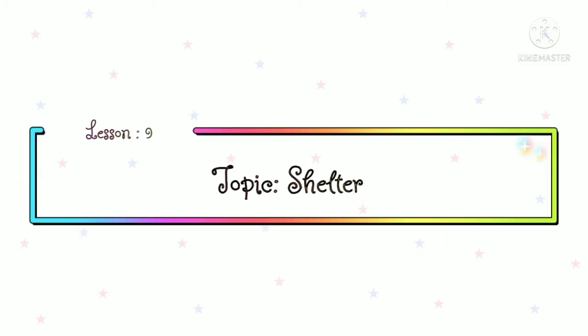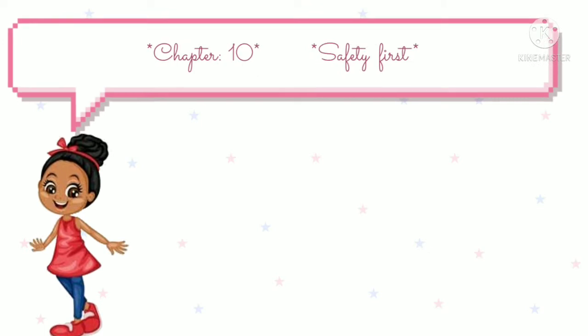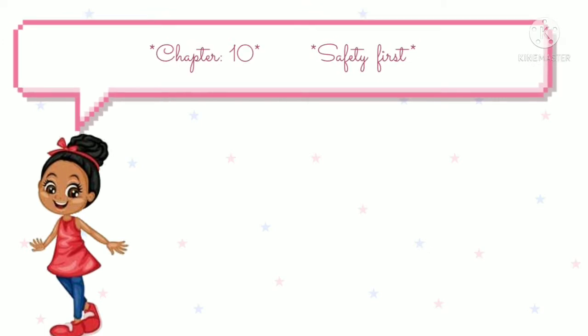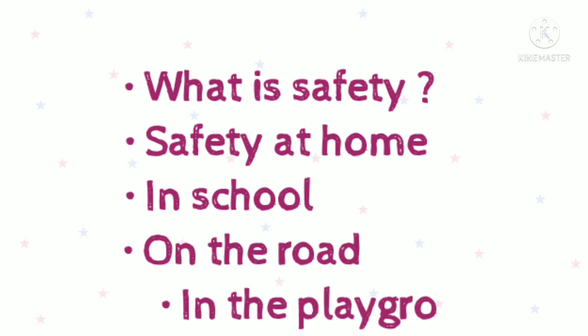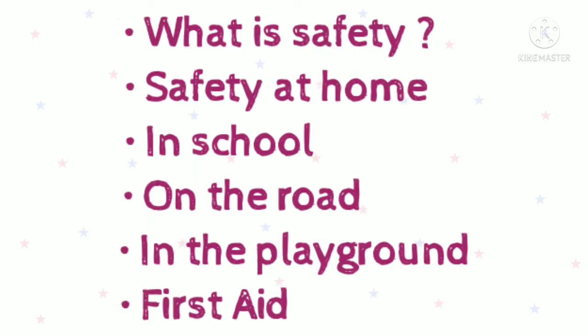Good morning children, welcome back to EVS online class. In the last class we completed lesson nine: Shelter. Today we are going to start a new chapter — chapter number 10: Safety First. In this lesson we will learn about what is safety and some safety rules.